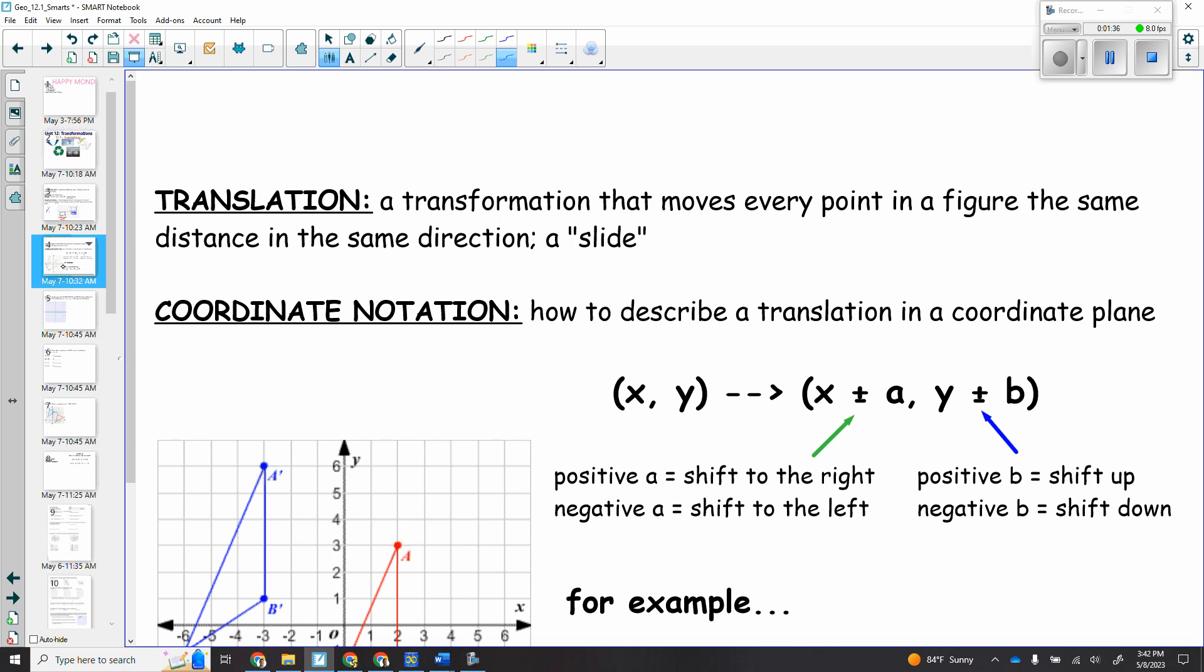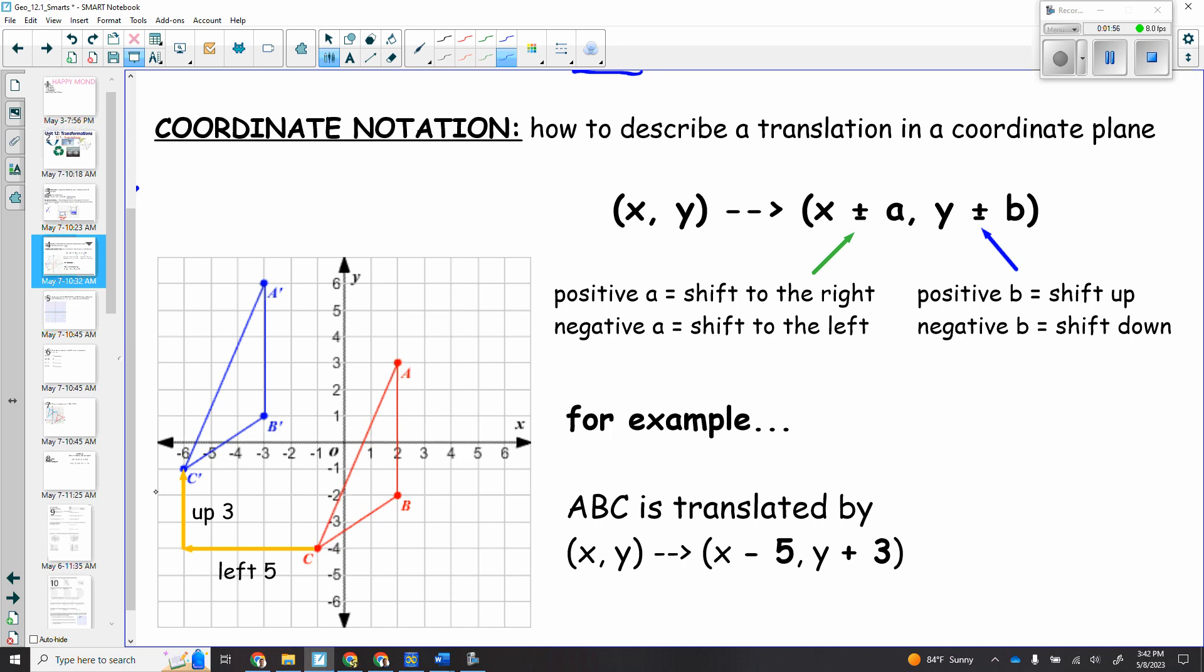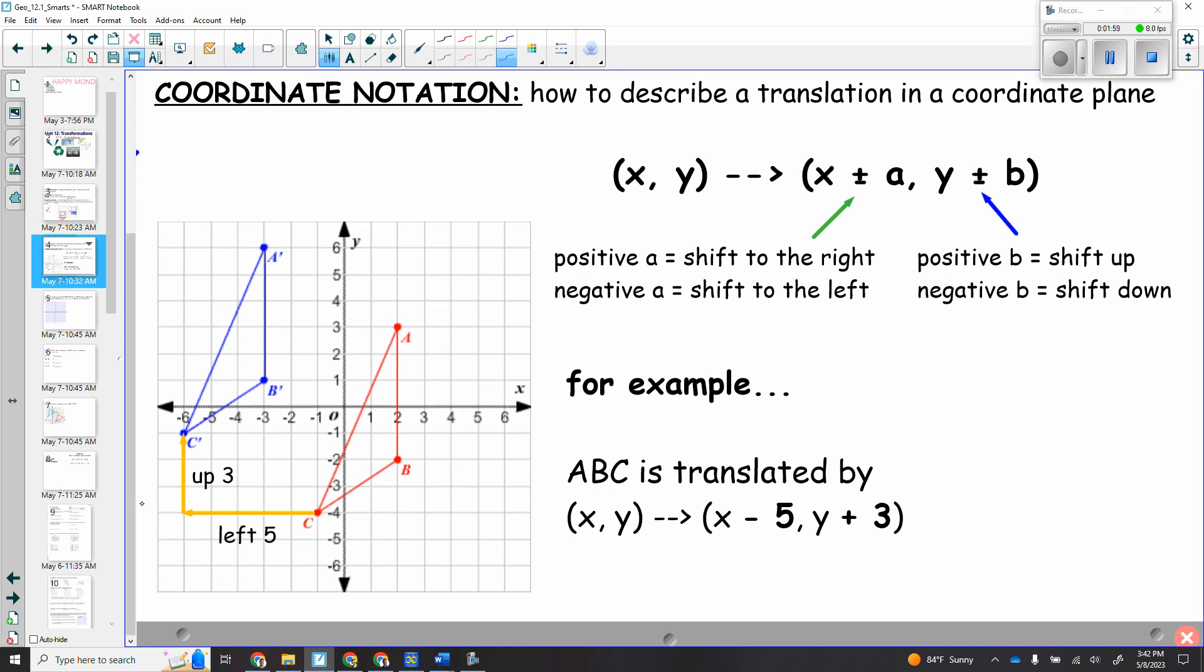We also use what's called prime notation. And so let's say we have this rectangle down here. This is just the pre-image ABCD, all right? ABCD. And we're going to make a new image. The way we would read this is A prime, B prime, C prime, and D prime. The way you pronounce it is with the word prime. So this little apostrophe looking thing, that's called prime, A prime.